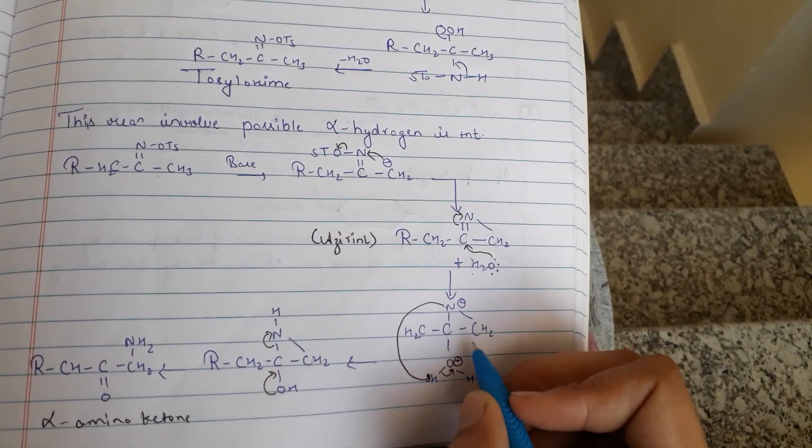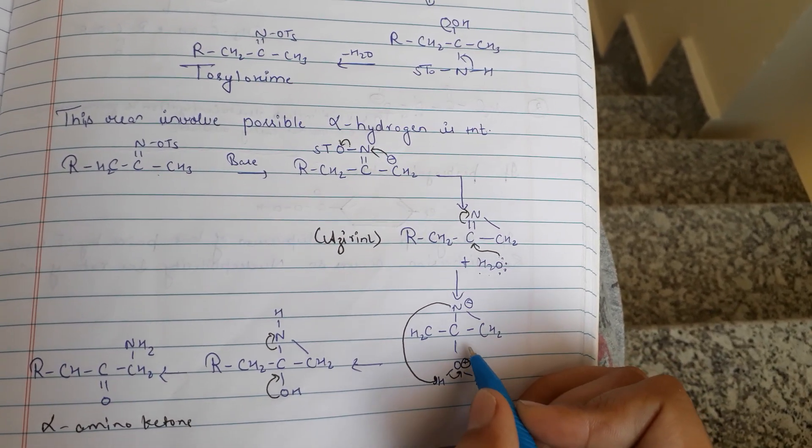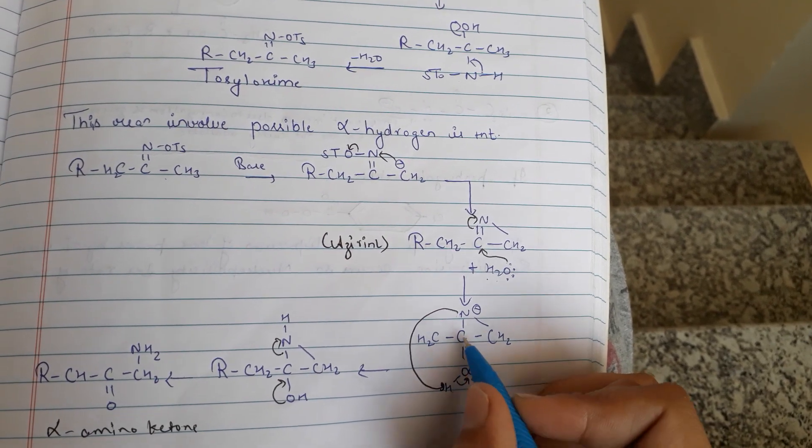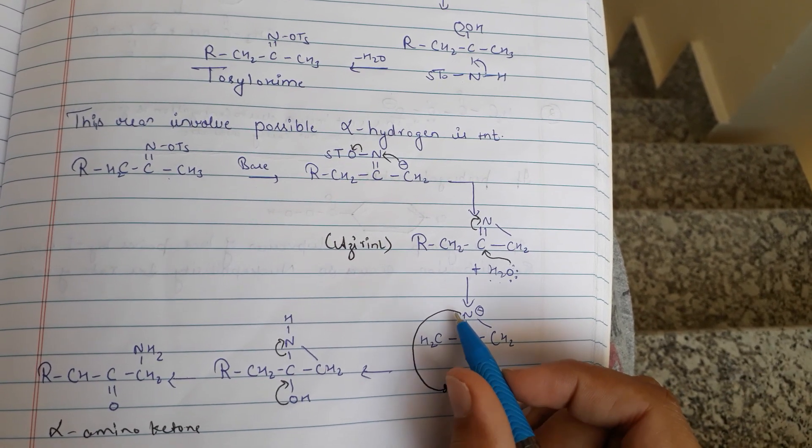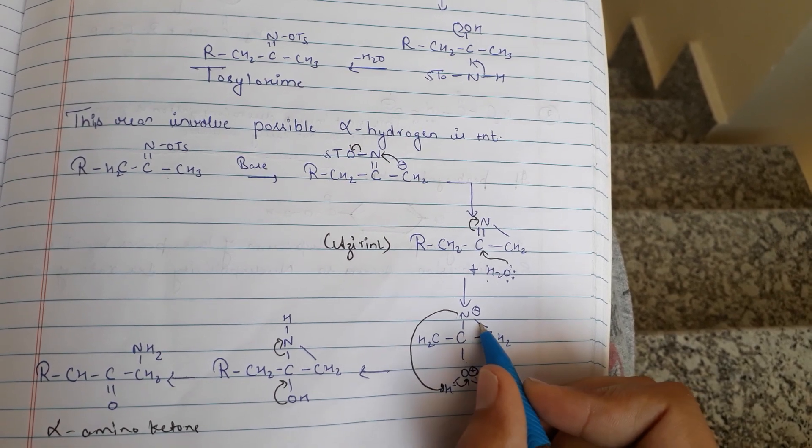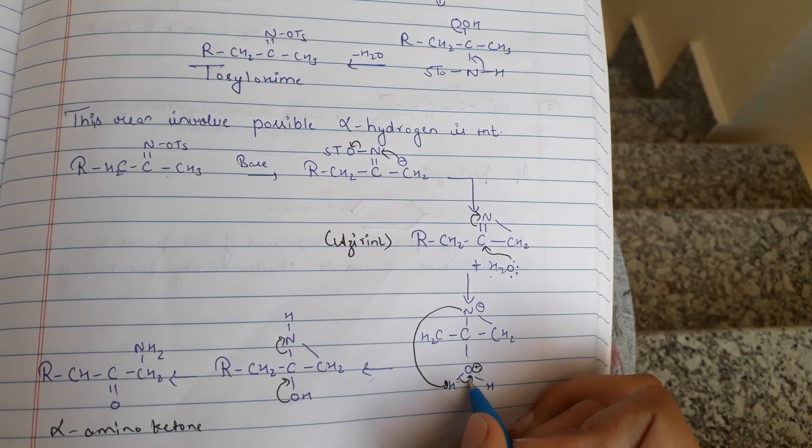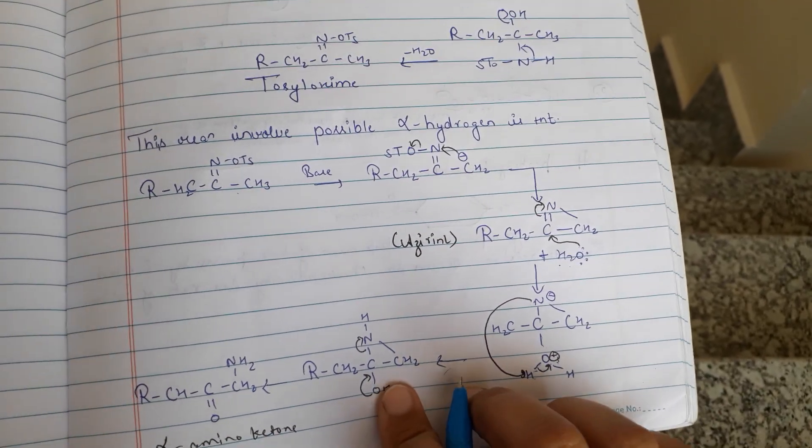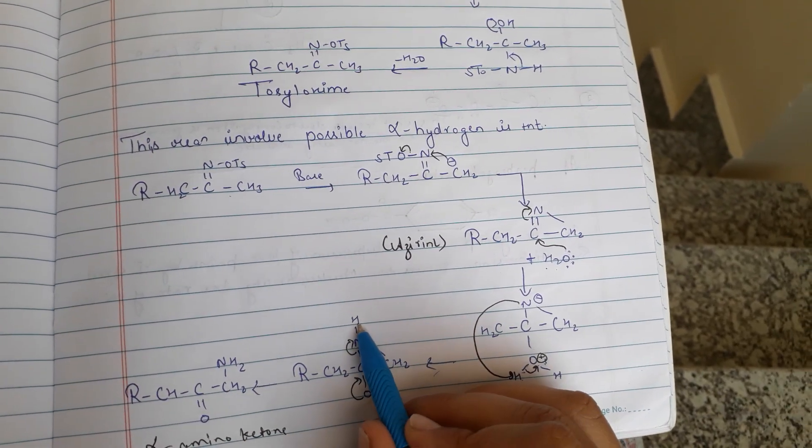H2O is shifting. OH with a positive charge forms. Now this NH will take that H, forming NH formation, and that will neutralize this positive charge. Then it will be OH here and there is NH here.